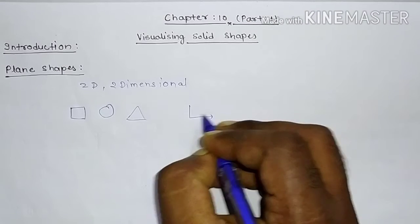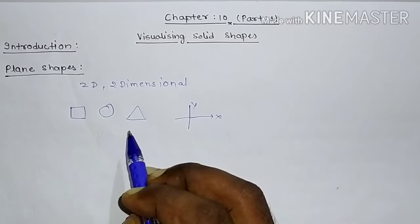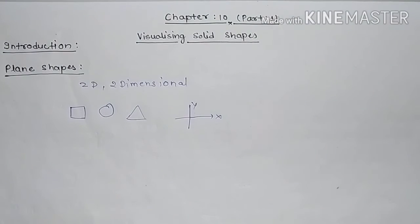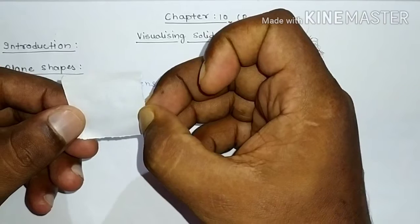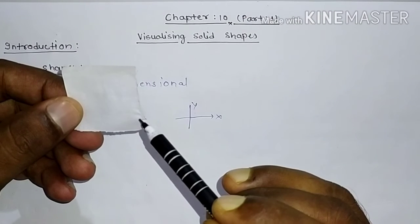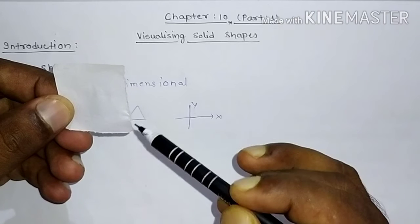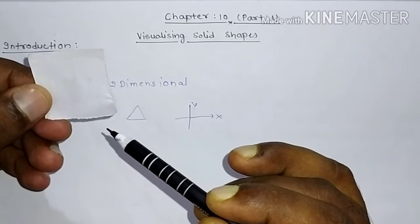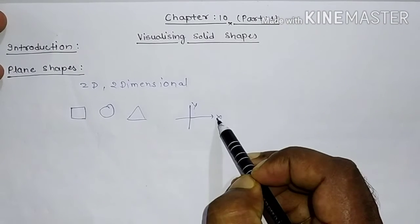This is the x-axis and this is the y-axis. For a complete explanation, we can take a paper — this is a two-dimensional figure because it has length and breadth but no height. So it's a two-dimensional figure with simply two axes: x-axis and y-axis.